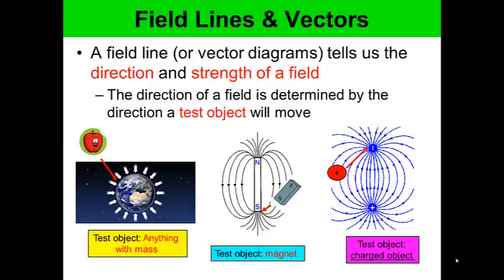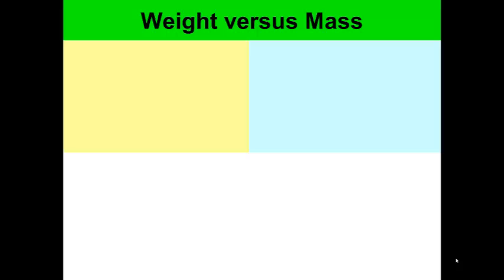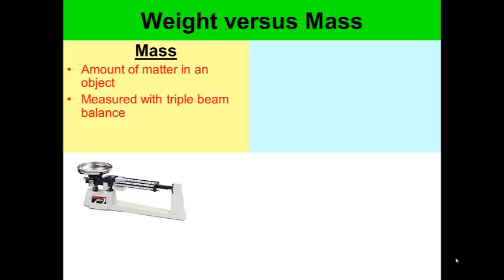What's the difference between weight and mass? We often use them interchangeably, but that is not correct. Mass is the amount of matter in an object. We measure this using a triple beam balance. Mass does not change with location — you could measure the mass of the same object on Saturn, the moon, or on Earth, and it would have the same mass.